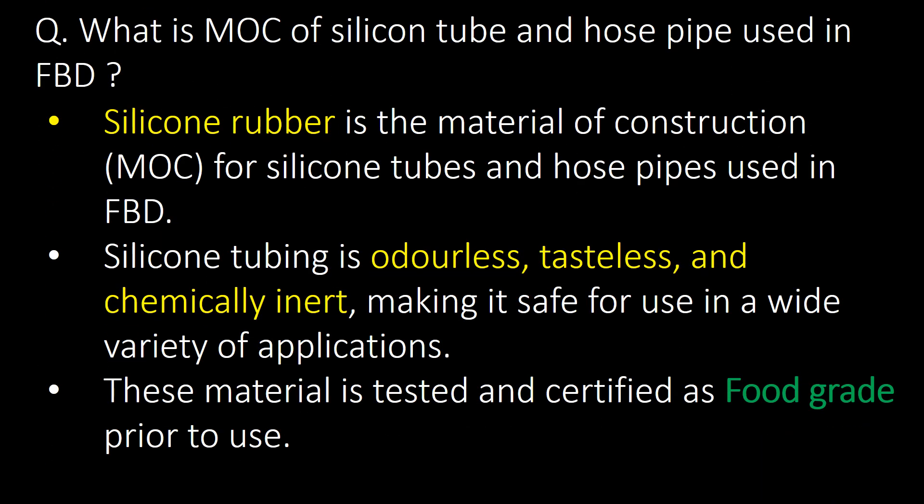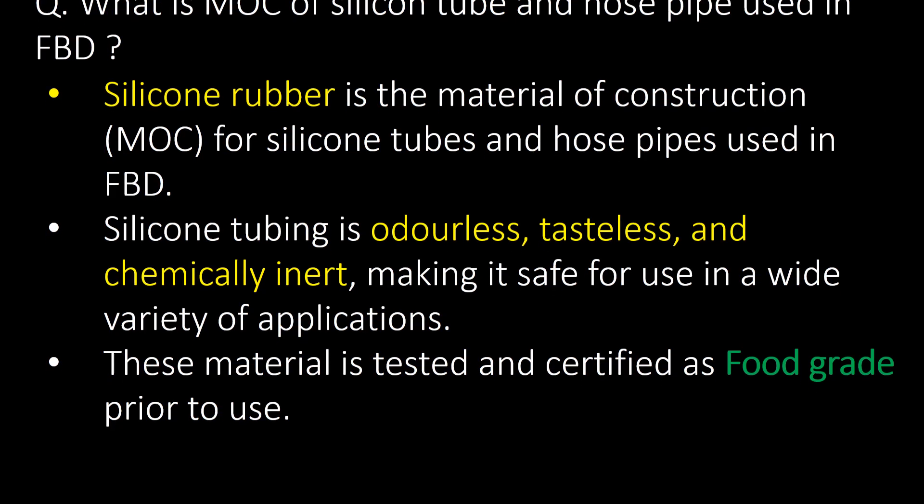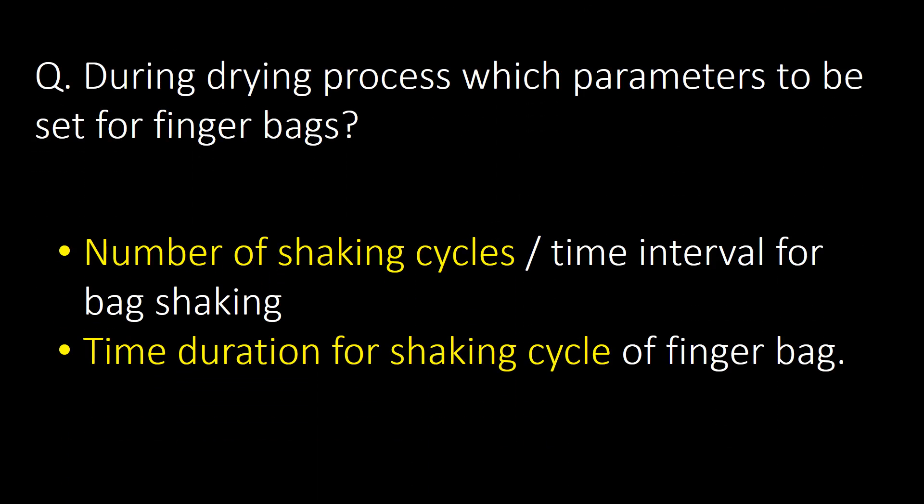What is the MOC of silicon tubes and hose pipes used in FBD? Silicon rubber is the material of construction (MOC) for silicon tubes and hose pipes used in FBD.